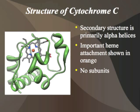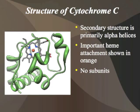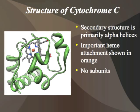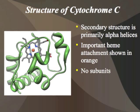Cytochrome C does not have any subunits and therefore has no quaternary structure. Even its tertiary structure is fairly simple, as you can see from the demonstration.